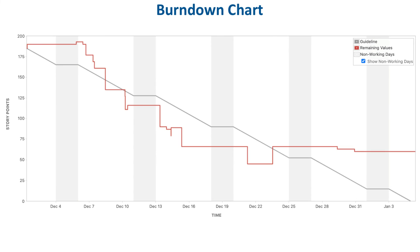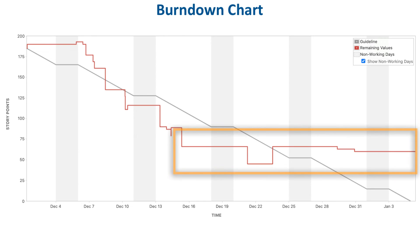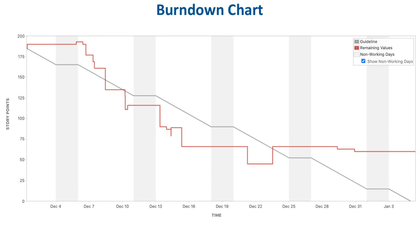The next sprint doesn't look nearly as good as the first one. It started well, but then halfway through, something happened and barely anything got completed past that point. As a result, when the sprint was completed, there were about 70 points of issues that were not completed, which is not desired, but it happens.